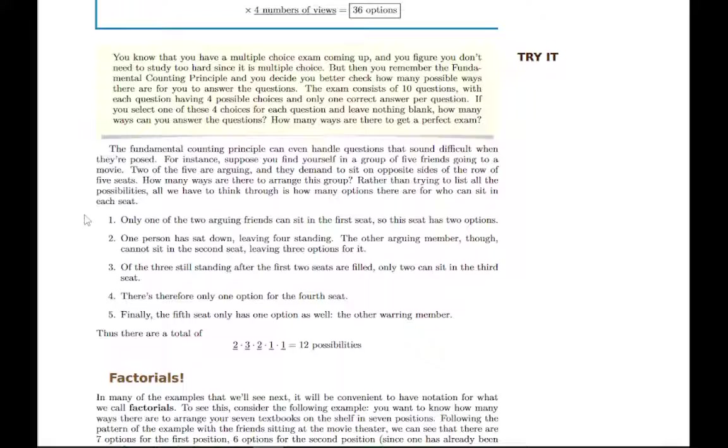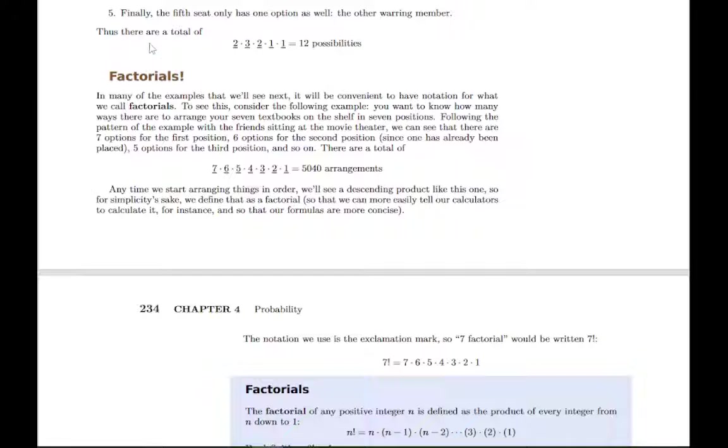The other two topics are called permutations and combinations, which are pretty similar. It's important to note the distinction between them. But both of them use what are called factorials. And basically when you have a situation like arranging seven books on a shelf in seven positions, you would have seven choices for which book to place first and then six choices for your second one and five and so on.